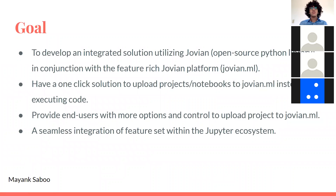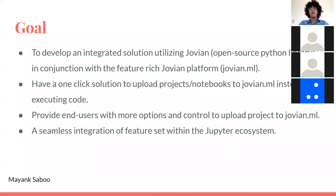The goal of this project was to develop an integrated solution that utilizes the open source Python library Jovian, working in conjunction with the platform jovian.ml. It would give us a one-click solution to upload projects to the platform instead of executing a line of code every time there was an update to the notebook. It would also provide users with more control options on how they want their projects to be uploaded, whether they want their environments to be reproducible, and give a seamless integration of all features the Jupyter ecosystem and the Jovian Python package have to offer.